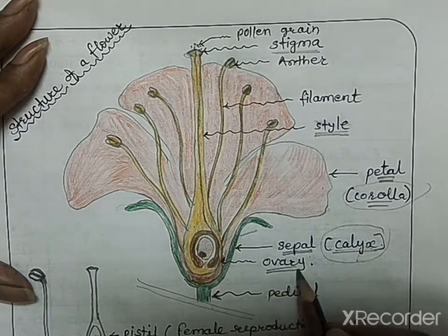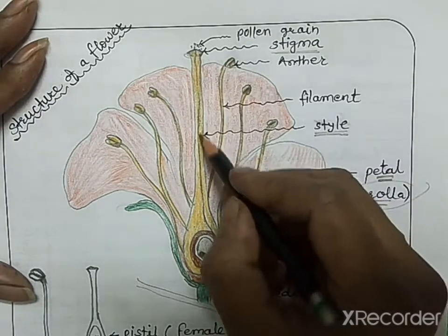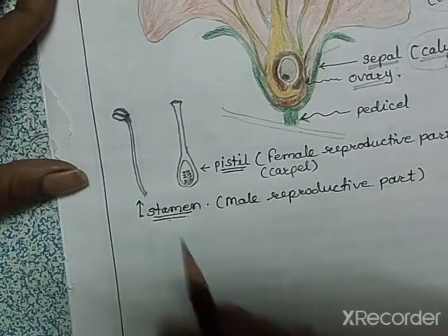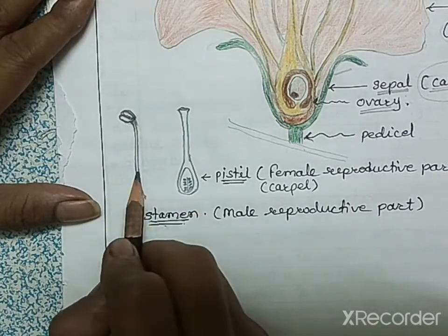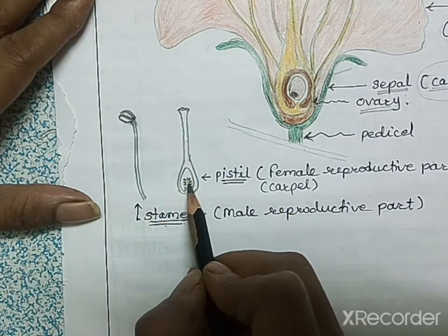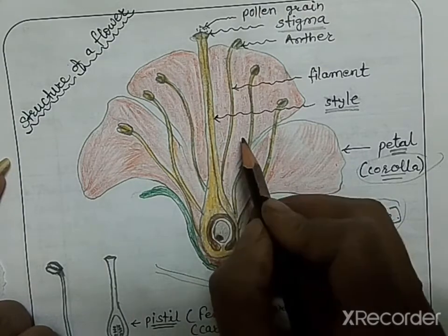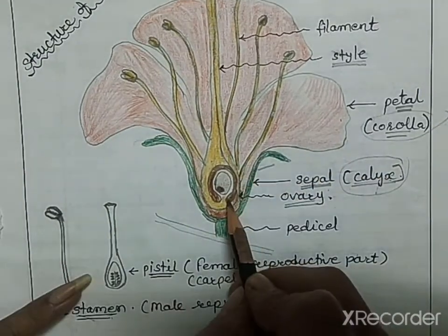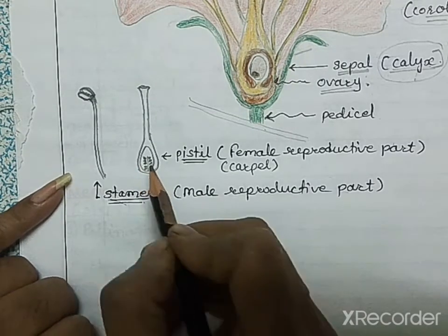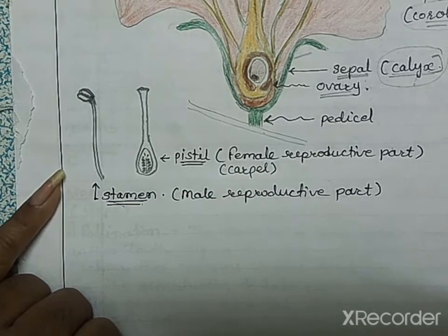The swollen part at the base is the ovary. The stamen — the male part — consists of anther and filament. The pistil — the female part — consists of stigma, style, and ovary. Inside the ovary, ovules are present and protected. What happens to the ovules and ovary will be discussed in part two.